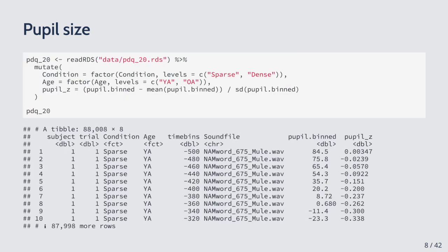Here is how the data was read into R. I'm converting the condition column into a factor with sparse as the first level and dense as the second, and age as a factor with levels young adult and old adult. I also standardized the pupil size — the units are arbitrary units used by the recording instrument, and since the numbers were quite large I Z-scored them, though this doesn't really matter much.